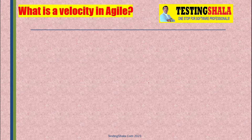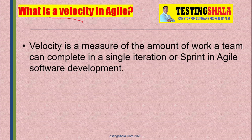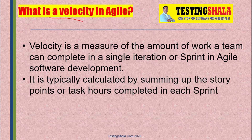In this video we'll learn about what is velocity in Agile. Velocity is a measure of the amount of work that a scrum team can complete in a single iteration or sprint. It is a key parameter, and velocity is calculated based on summing the total user story points.